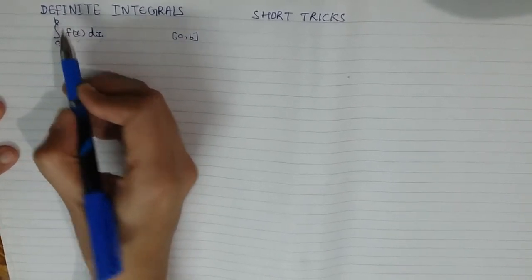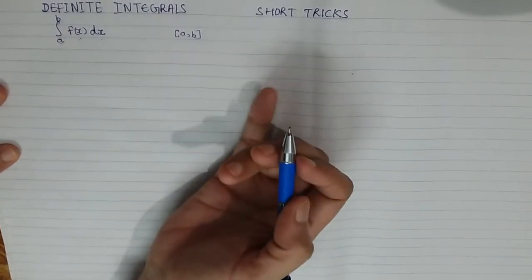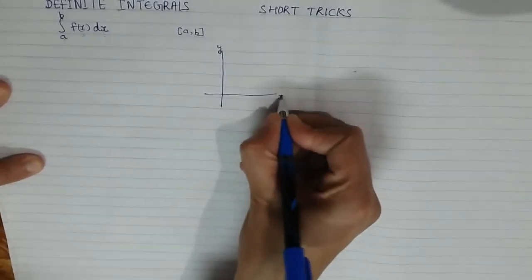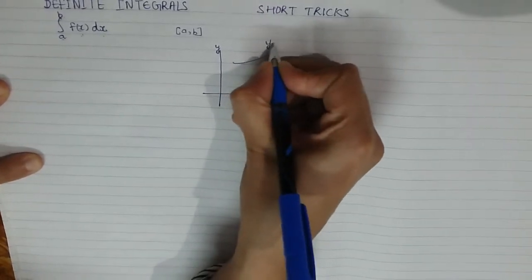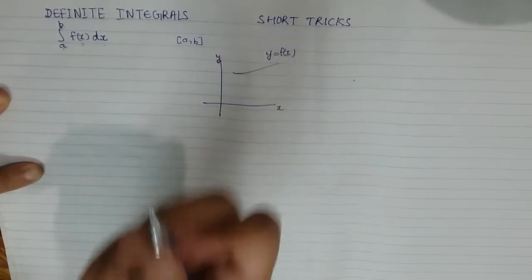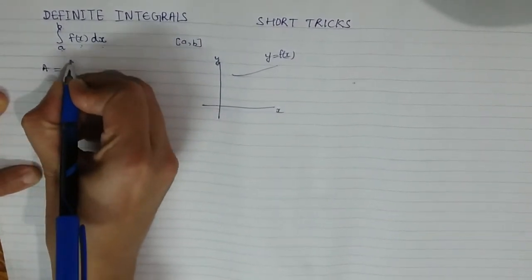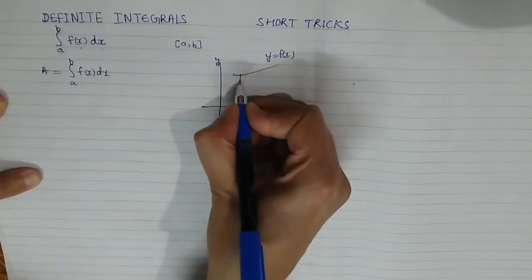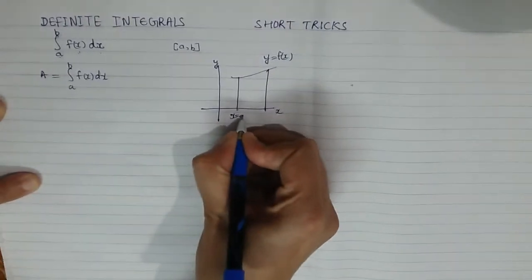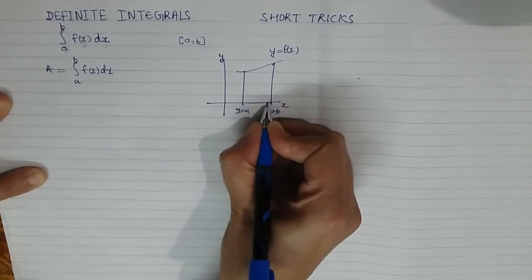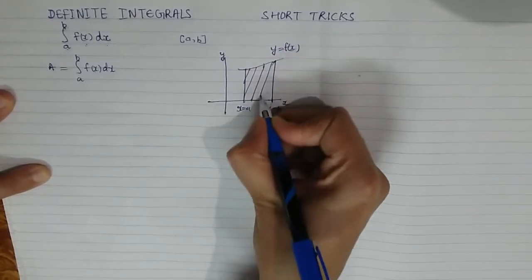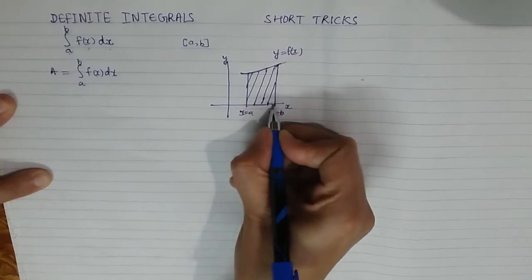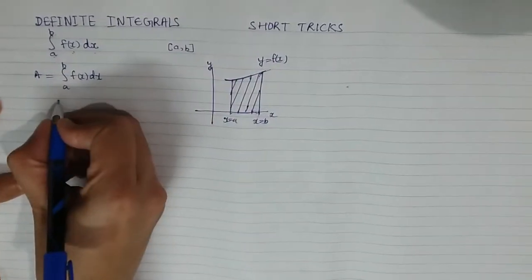The definite integral is the area bounded by the curve y = f(x). Let us draw the curve — this is the y-axis and this is the x-axis. The definite integral from a to b of f(x) dx is the area bounded by this curve, the two ordinates x = a and x = b, and the x-axis — that is, this shaded region.